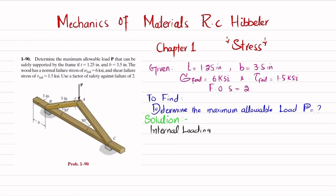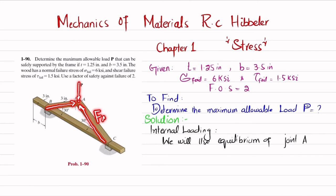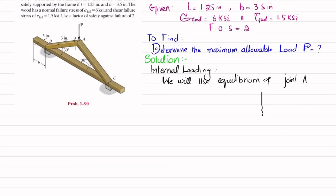To find the force in member AB, we will use the force equilibrium of joint A. At joint A we have load P, this member will exert a load FAB in one direction, and FAC will exert force in another direction. We draw the free body diagram: at point A there is a vertical force P downward, FAB acting in one direction, and FAC acting in the opposite direction.